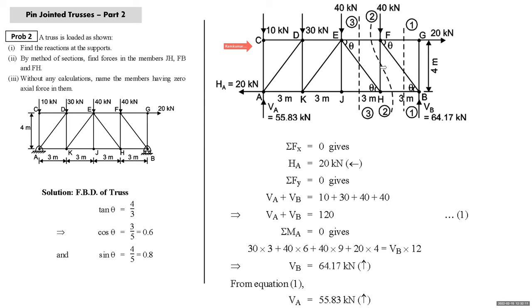For member FB, consider FBD of the part of the truss to the right of section 1-1. Write sigma Fy = 0: Fvf sine theta + 64.17 = 0, giving Fvf = -82.21 kN, i.e., 82.21 kN compression. For FH, consider right side of section 2-2: sigma Fy = 0 gives 40 + Ffh = 64.17, so Ffh = 24.17 kN. For JH, take section 3-3 and take moment about E so that EF and EH go off; the calculation gives Fjh = 66.25 kN.